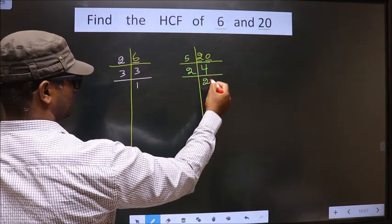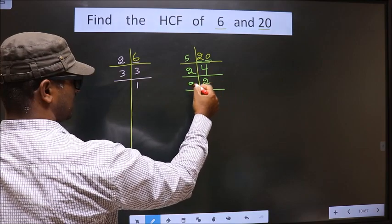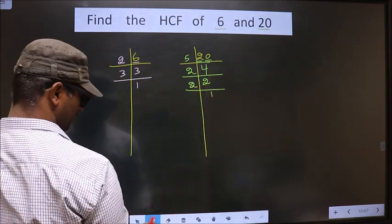Now, 4 is even, so 2 2s. Now, 2 is a prime number, so we take 2 and 1.